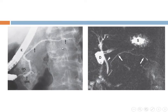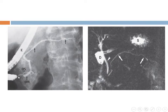Here we have ERCP showing the main pancreatic duct, which drains through the duct of Wirsung into the major papilla. We also have the accessory duct, the duct of Santorini. Here we have MRCP showing the main pancreatic duct, and we also have the CBD here; they drain together. This is the duodenum and the patient has had a cholecystectomy.